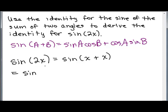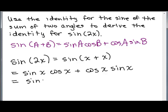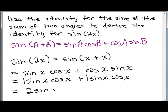It's the sine of the first thing in the parentheses — which is x — times the cosine of the second thing, which is also x. Then plus the cosine of the first thing, which is x, times the sine of the second, which is also x. These are like terms, and using the commutative property, adding them gives you 2 sine x cosine x.